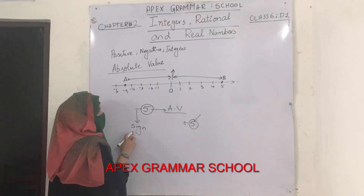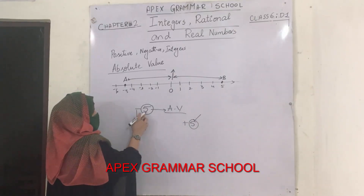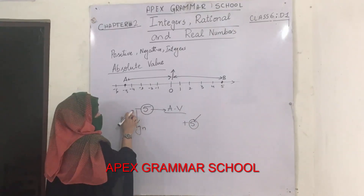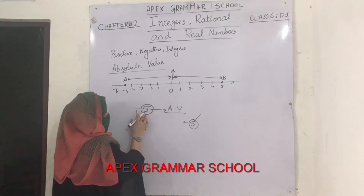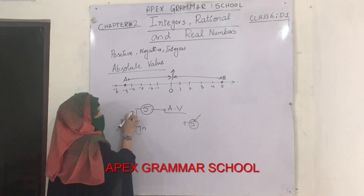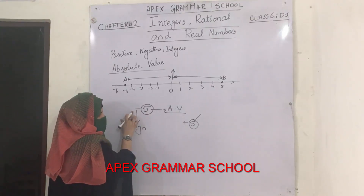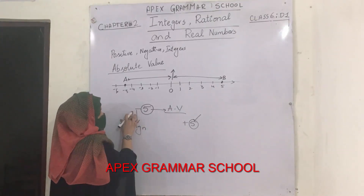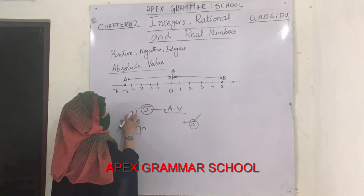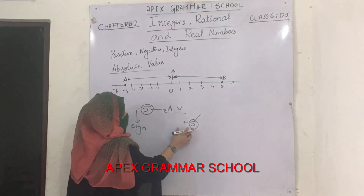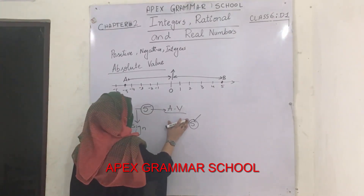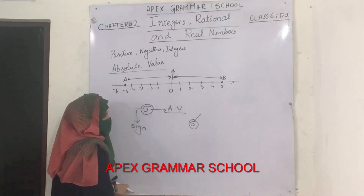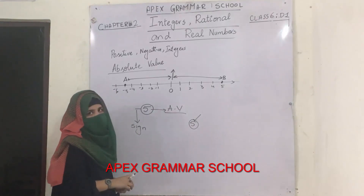Remember that the sign of any number is always written before the number. You always have to write a negative sign before a number if it is a negative number. But there is no need to write positive if the number is positive — it is completely your choice whether you want to write positive before 5 or not.